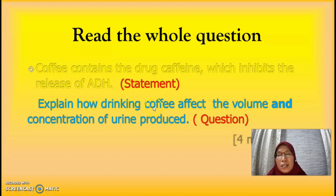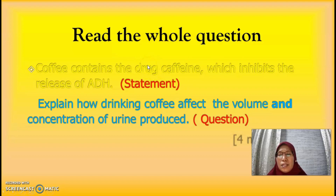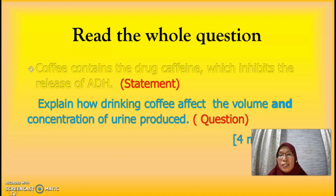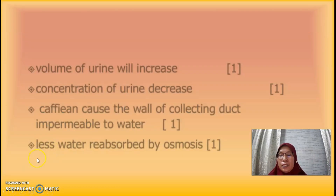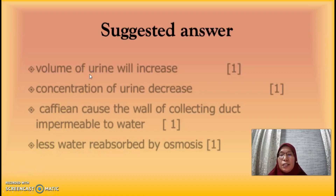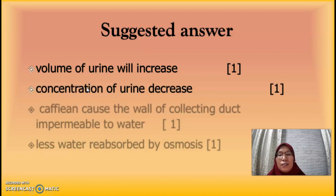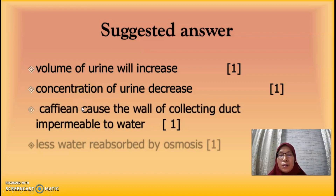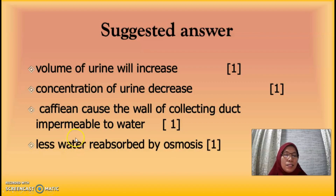From the coffee example, the keyword is given in the statement: caffeine inhibits ADH release. So the suggested answer is: the volume of urine increases and the concentration of urine decreases, because caffeine causes the wall of the collecting duct to become impermeable to water, so less water is reabsorbed by osmosis.